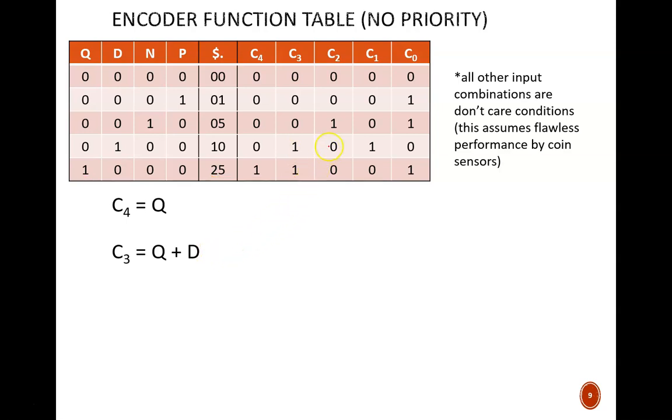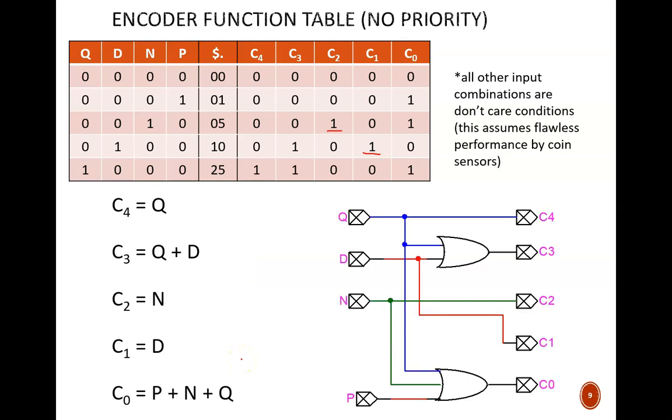Continue this pattern for all the columns. C2 equals N. C1 equals D. C0 is the most complicated because there are three possibilities. C0 equals P or N or Q. These simple equations lead to a simple logic circuit, shown here.